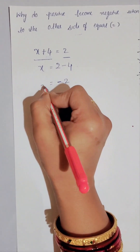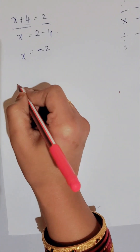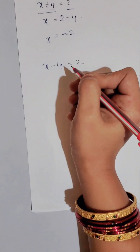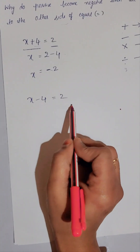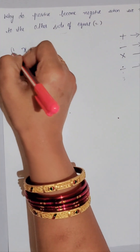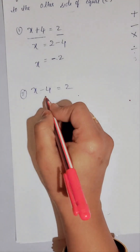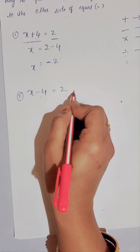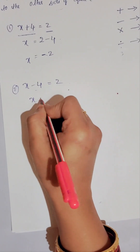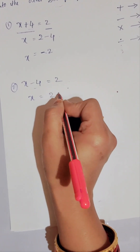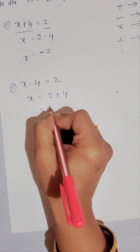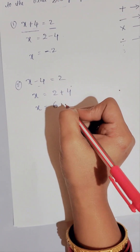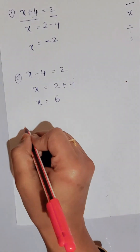So x = 2 - 4, which gives x = -2. Next example: x - 4 = 2. Here minus 4 is on the left side; when it moves to the right hand side it becomes plus. So x = 2 + 4 = 6. The x value is 6.